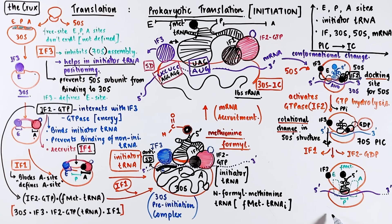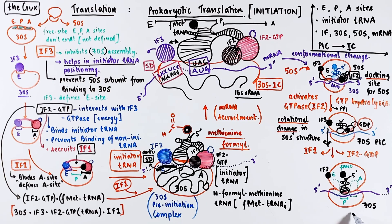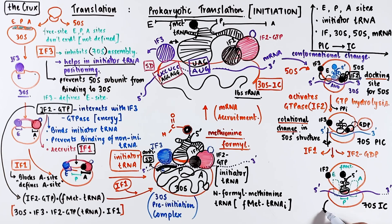This is the final 70S initiation complex, which concludes the initiation stage of translation. This 70S ribosome is now ready for the elongation stage.